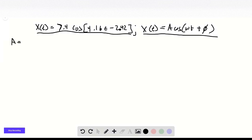So the first one we can extract is A equals 7.4 centimeters, omega equals 4.16 rads per second, and finally the phase shift is negative 2.42 rads, or radians.